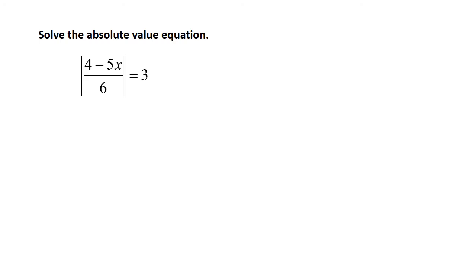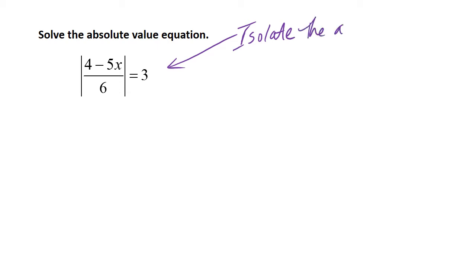Here's another equation: the absolute value of (4 minus 5x) over 6, all of that in the absolute value, equals 3. Remember, we said always isolate the absolute value. Well, luckily here we already have it isolated. If we didn't have it by itself, we would want to start by isolating it.